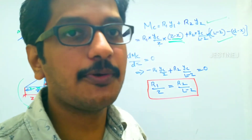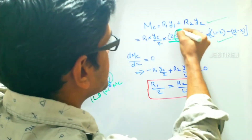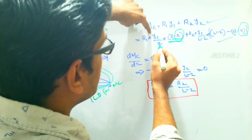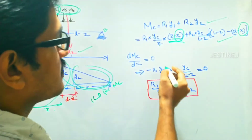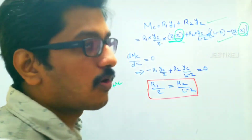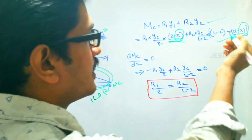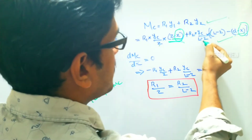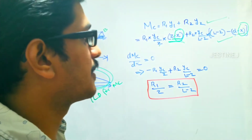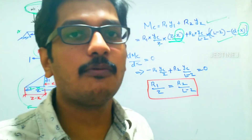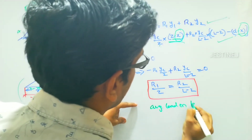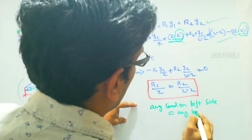For finding the maximum bending moment we take the derivative and set it equal to zero. Differentiating, we get minus R1·yc/z from one term and plus R2·yc/(z·(l−z)) from the other, with all other terms going to zero. This gives the final expression: R1/z = R2/(l−z). This means the average load on the left side equals the average load on the right side.